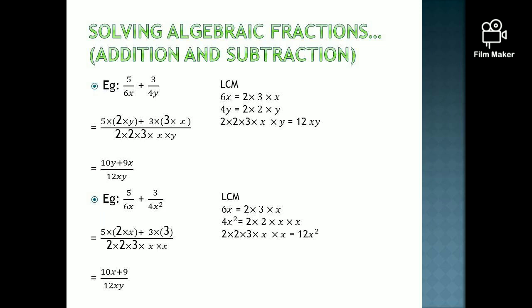Let's simplify 5 over 6x plus 3 over 4y. Take the LCM of 6x and 4y — the answer is 12xy. Write the expansion version as 2 into 2 into 3 into x into y. For 5 over 6x, cover 2 into 3 into x — the remaining term would be 2 into y. So write 5 into 2 into y. Plus 3 into... cover 4y, which is 2 into 2 into y — the remaining term is 3x. So 3 into 3 into x. Simplify: 5 into 2 into y is 10y, plus 3 into 3 into x is 9x, over 12xy. That is the final answer.